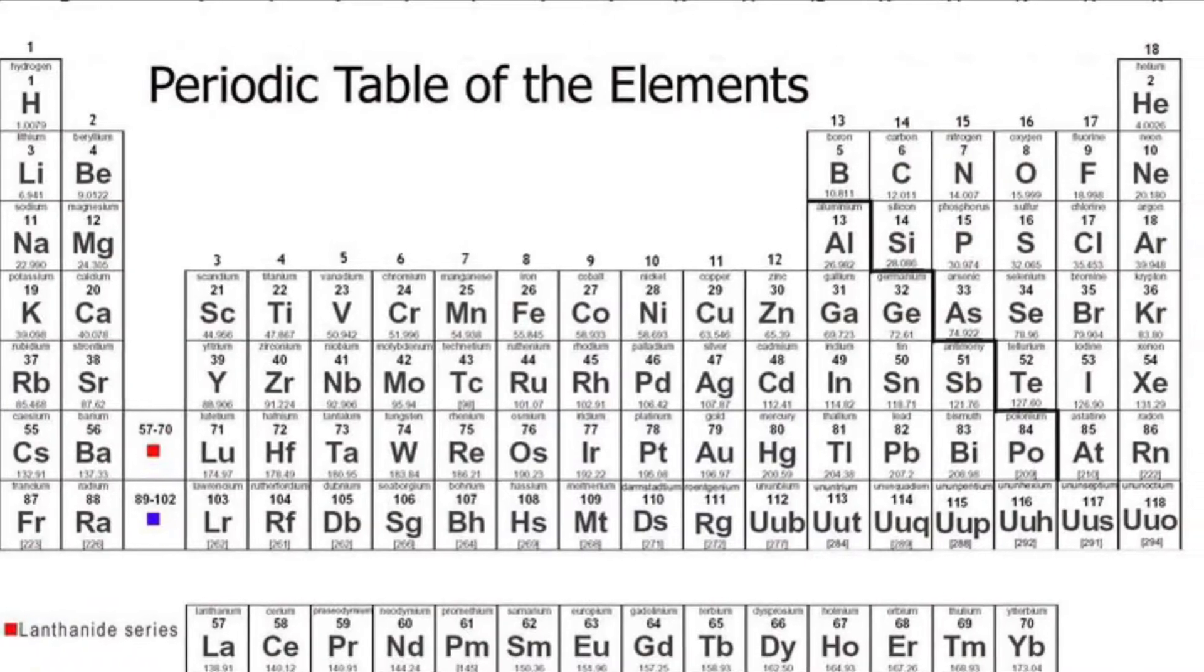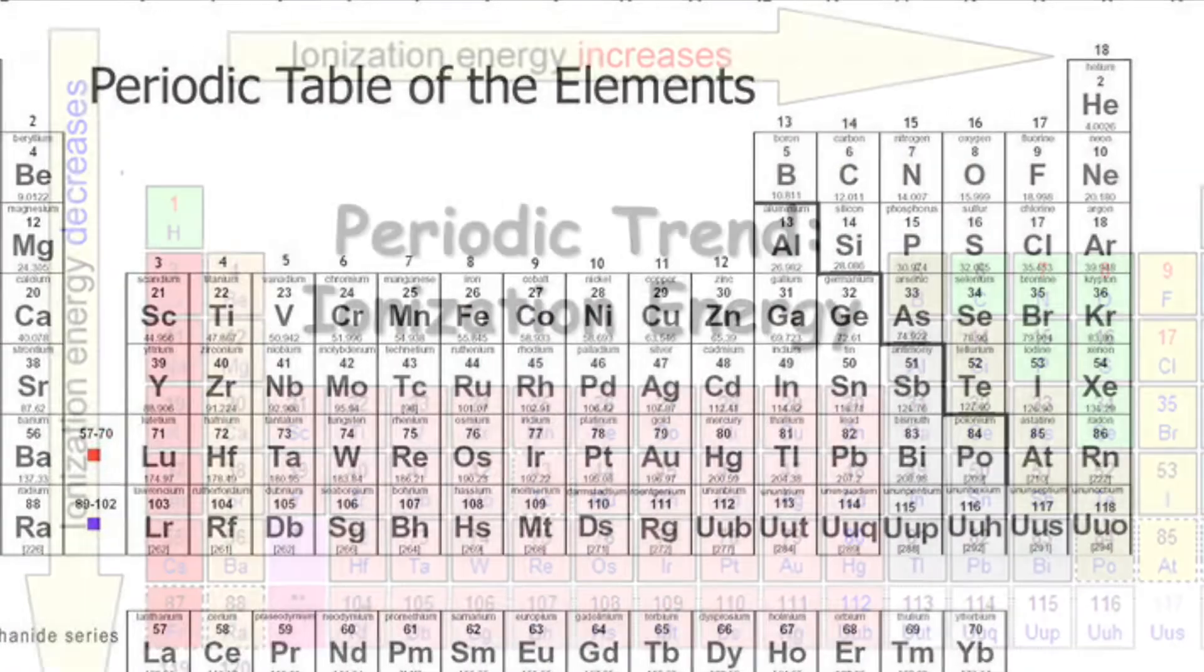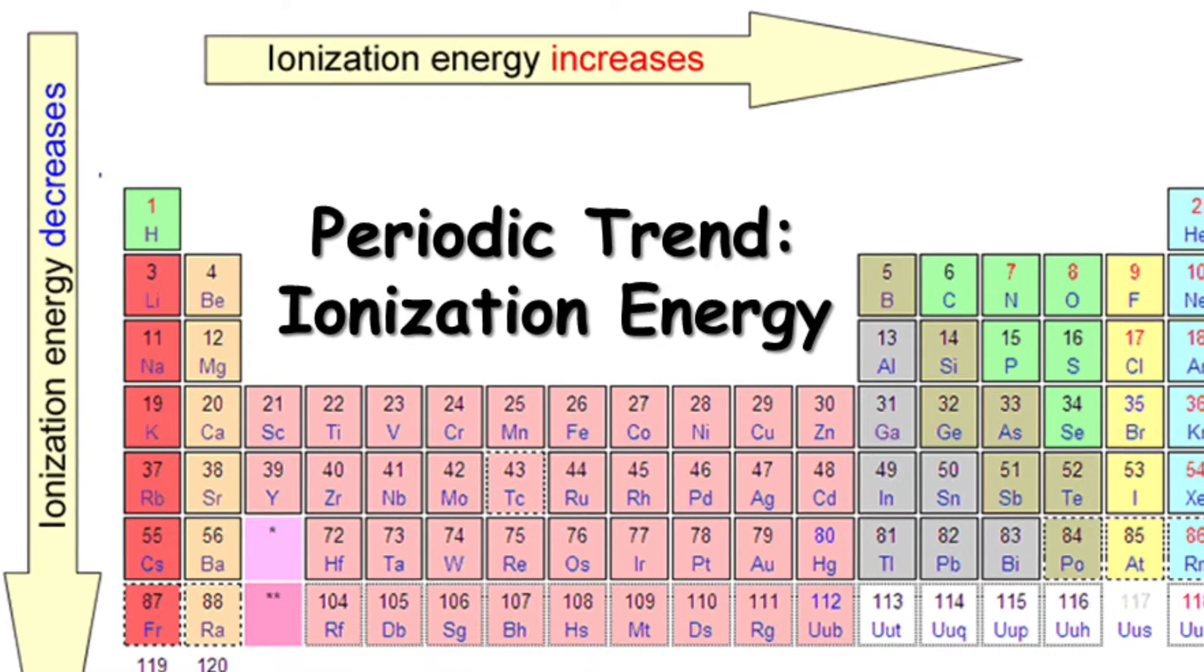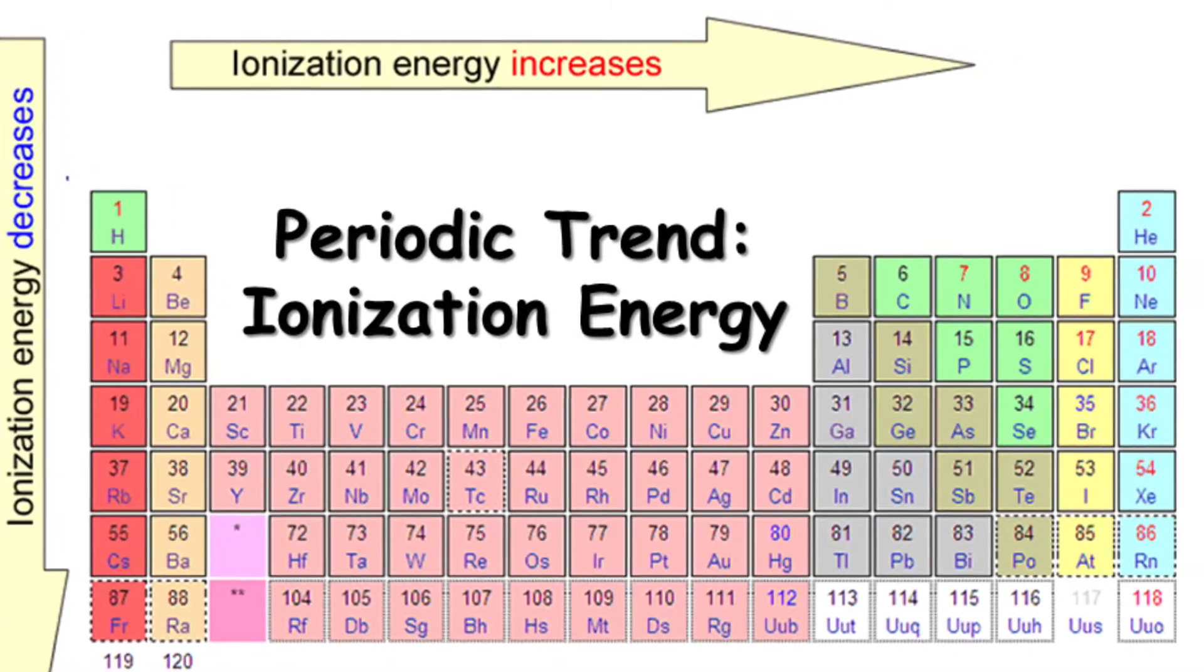Ionization energy, or the energy required for an atom to lose an electron and become a cation, increases as you move left to right across a period and increases as you move down to up across the group.